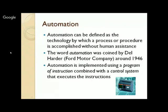For implementing automation, we need a program of instructions combined with a control system that executes the instructions. The control system consists of primarily four components: actuators that actually do the work, sensors which provide feedback about various parameters, the controller which receives information from sensors and accordingly switches on or off the actuators or changes their speed, and the fourth major component is signal conditioning.